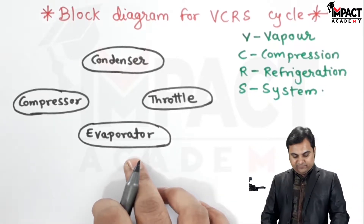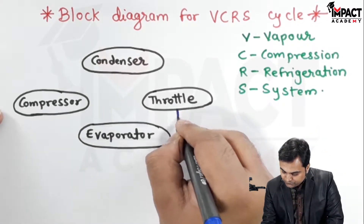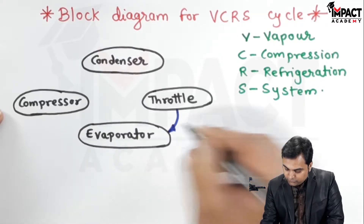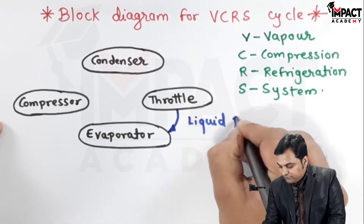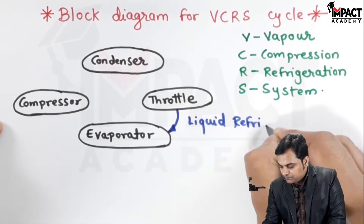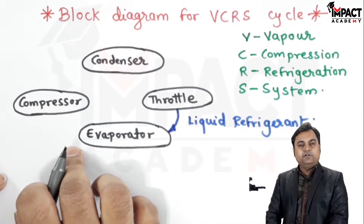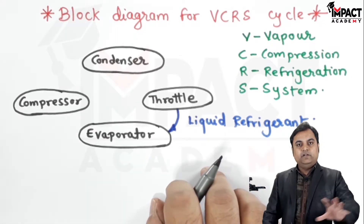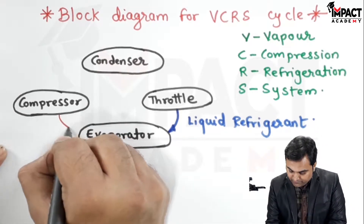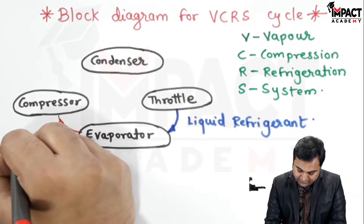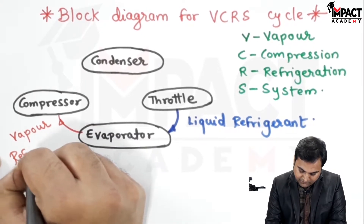At first, the liquid refrigerant will enter from the throttle into the evaporator. Inside the evaporator, this liquid refrigerant will go on absorbing heat and then it will vaporize. So at the exit of the evaporator, we are getting vapor refrigerant.